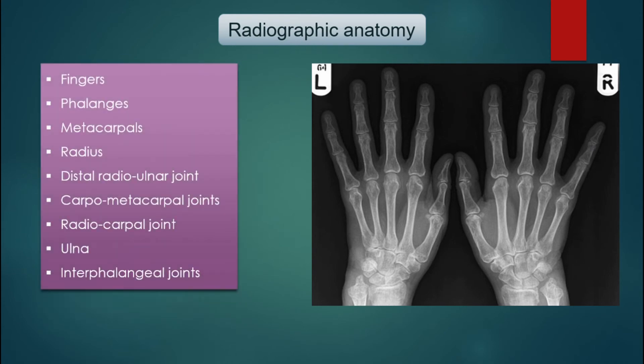Radiographic anatomy: fingers, phalanges, metacarpals, radius, distal radio-ulnar joint, carpo-metacarpal joint, radiocarpal joint, ulnar, interphalangeal joint.